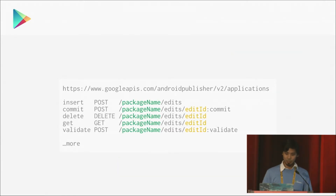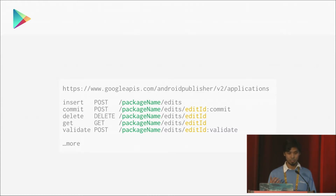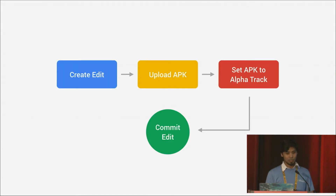Here's an example for the Google Play Developer APIs. You have to create what we call an edit, which is basically like a change list, and you can commit the edit. Going back to the earlier example — if you want to push your alpha build every day, all you need to do is create an edit, upload your APK, set your APK to the alpha track, and then finally commit that edit.